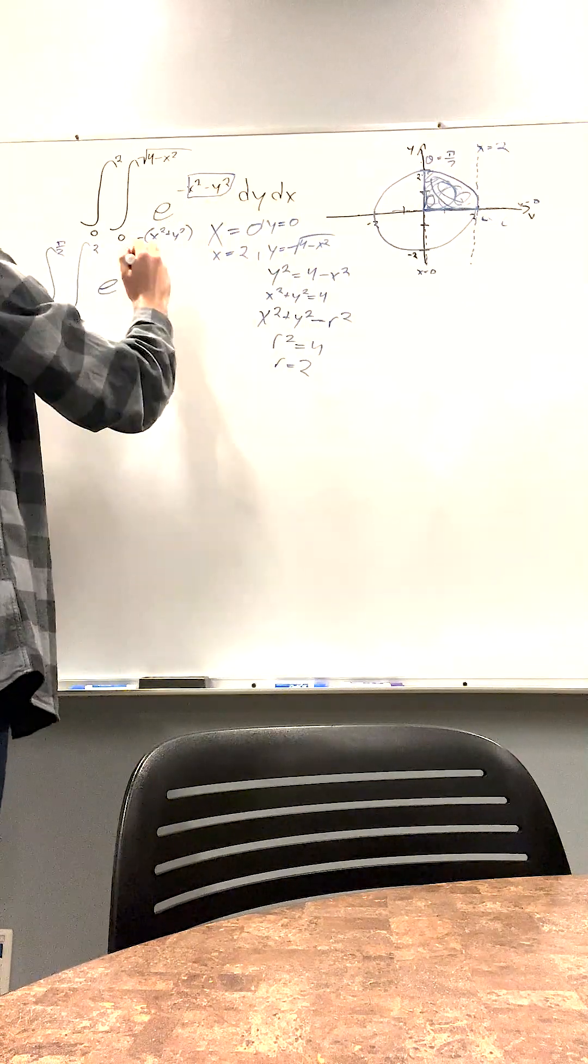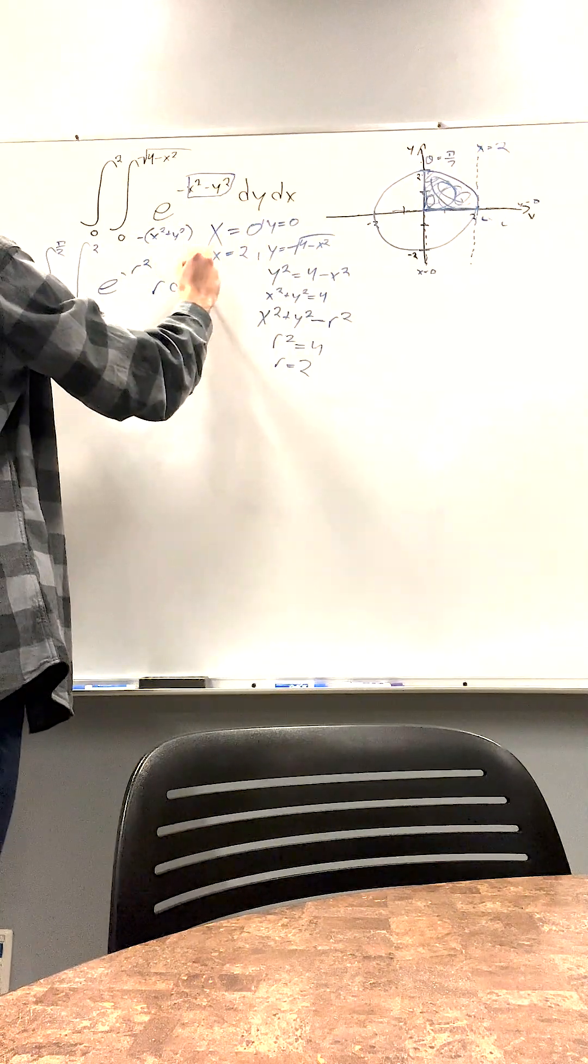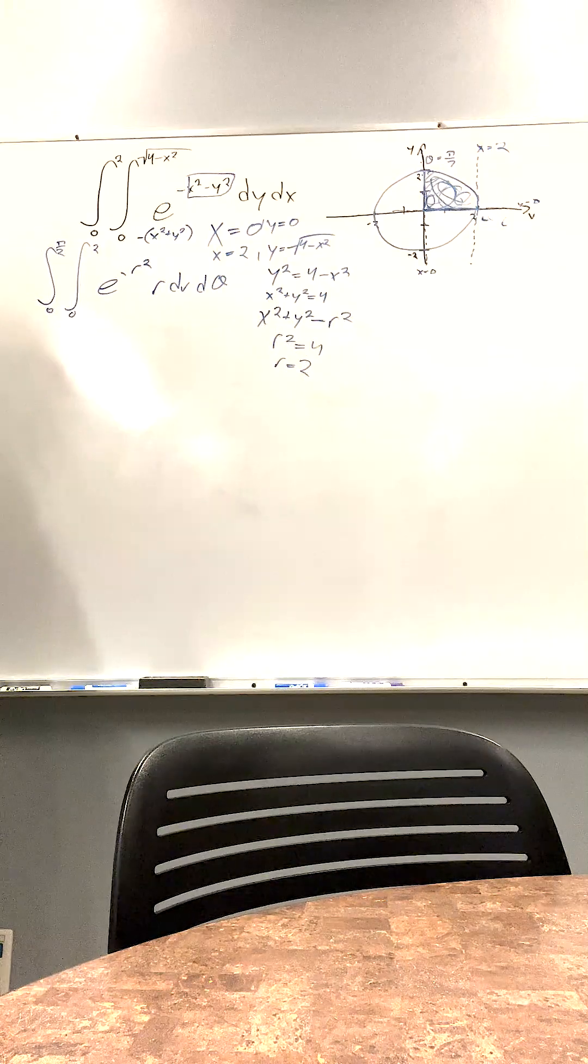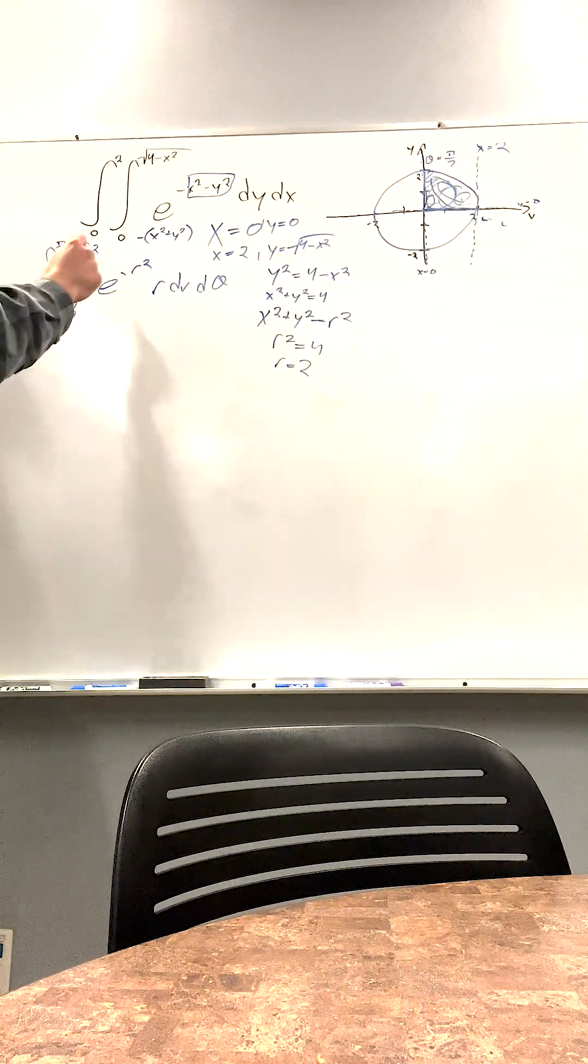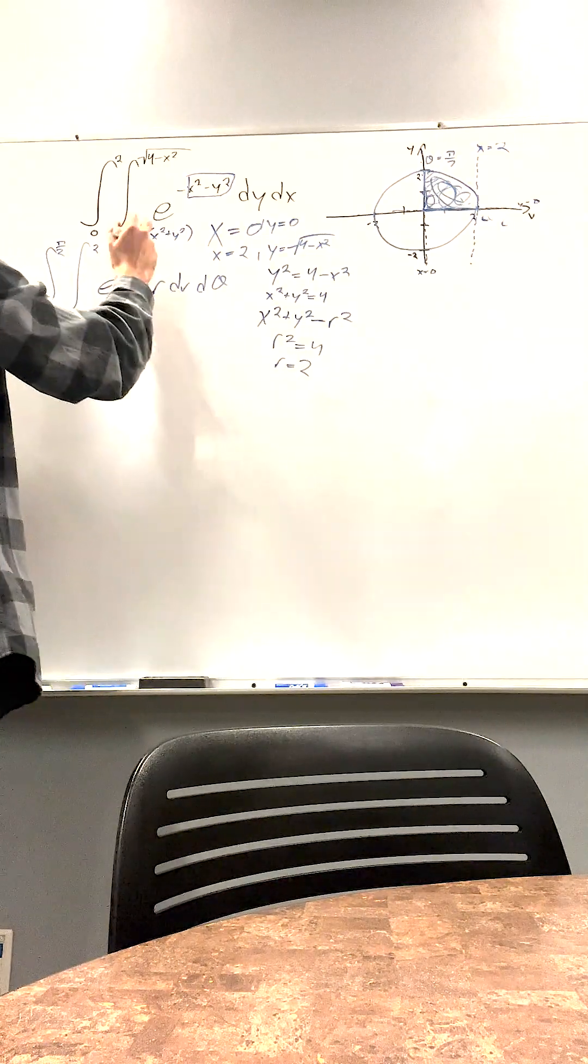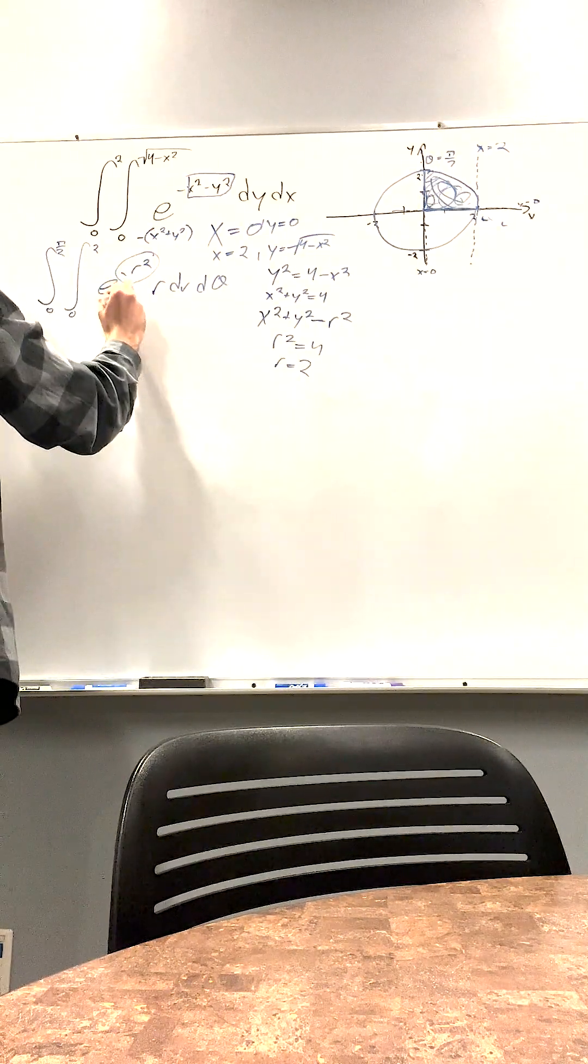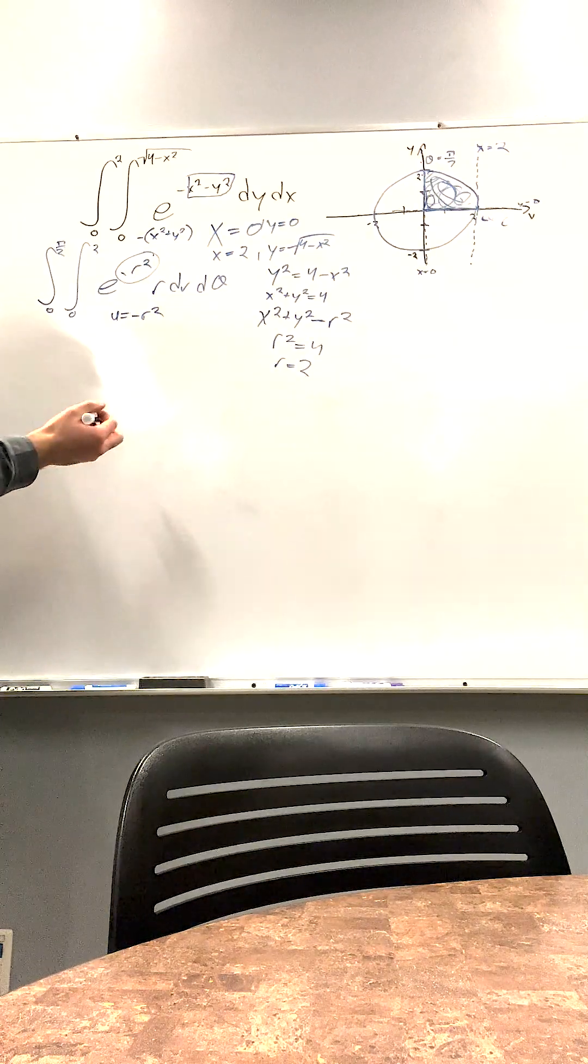And then dy dx turns into r dr d theta. And here, now we have our bound. This is what we got. And if you notice here, we can actually do a u sub to solve this. So we're going to set u is equal to negative r squared.